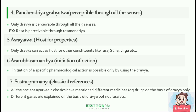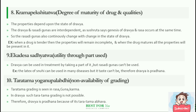Shastra Pramanya, which means classical references. All the ancient Ayurvedic classics have mentioned different medicines or drugs on the basis of Dravya only. Dravya is the basis for everything — different ganas are explained on the basis of Dravya, but not Rasa.